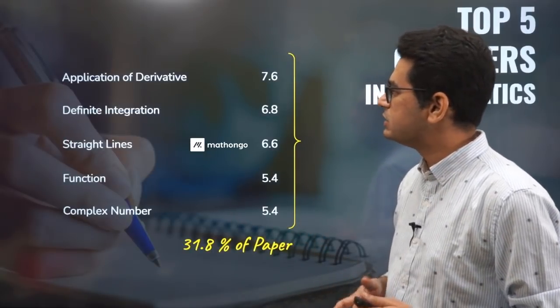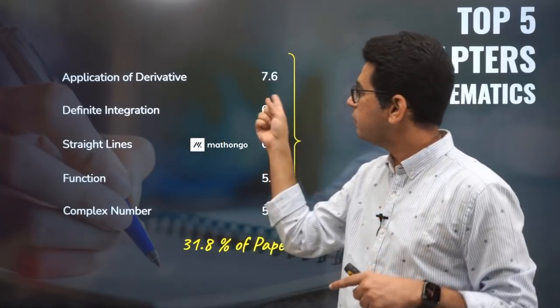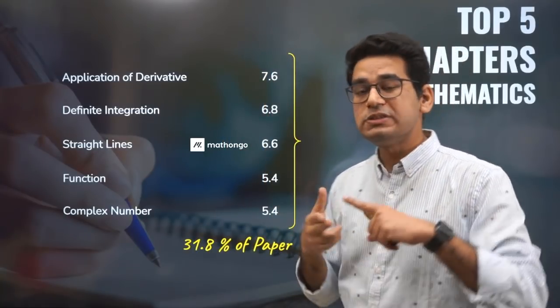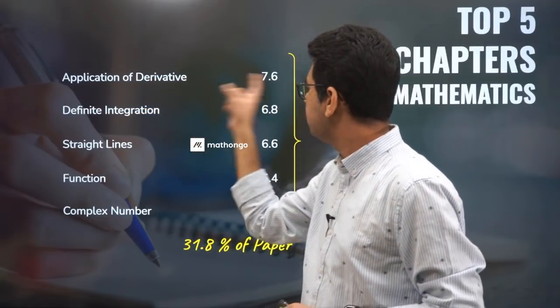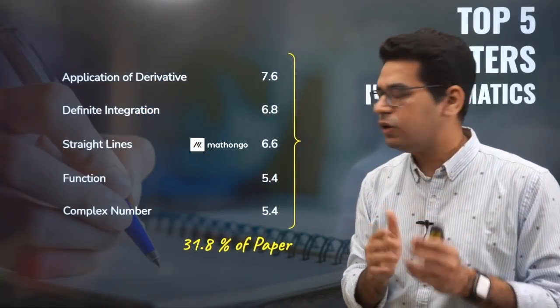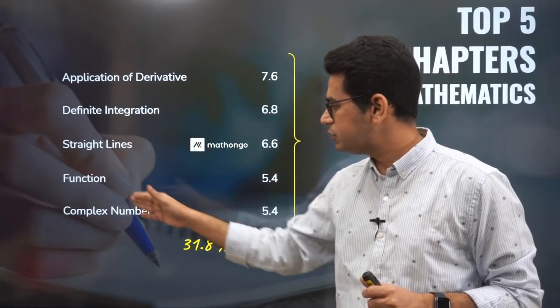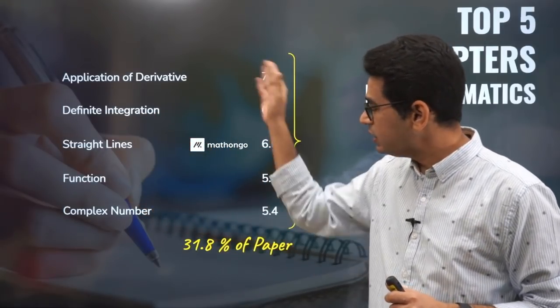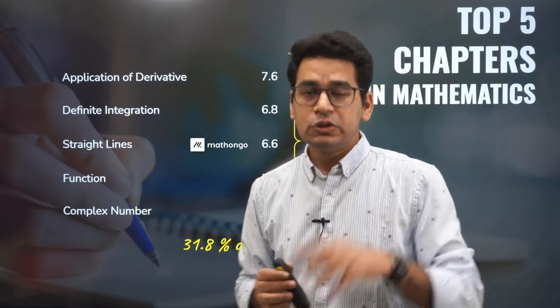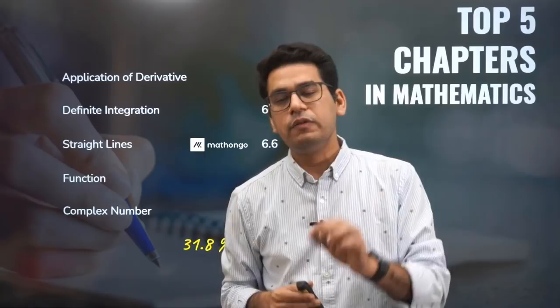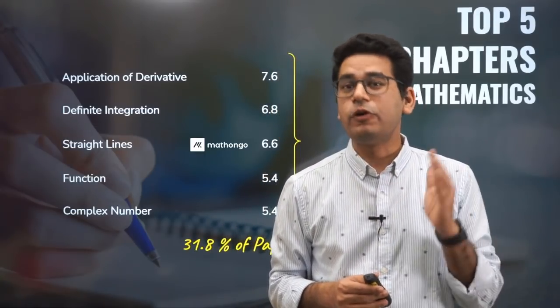Let's talk about maths. Application of derivatives, as I told you, has fewer questions but higher weightage because more two-mark questions come from it. Application of derivative is 7.6% of the exam weightage. Definite integration, straight lines, functions, complex numbers. This in totality comprises 31.8% of the paper. So now you know what are the top five chapters per subject for WBJE.